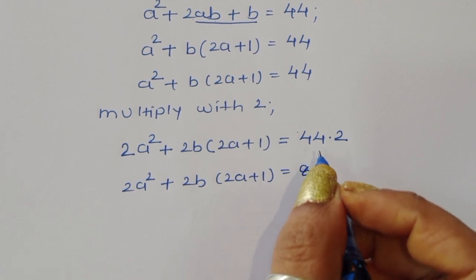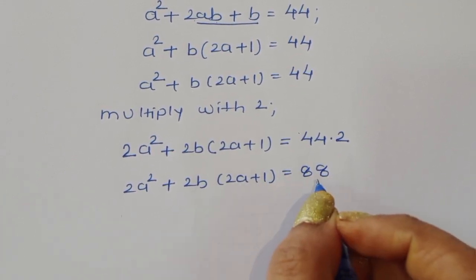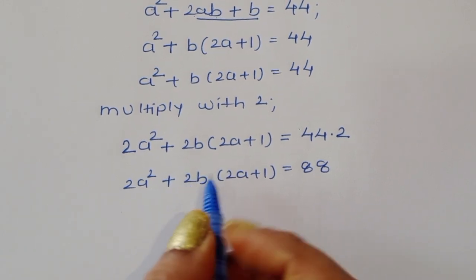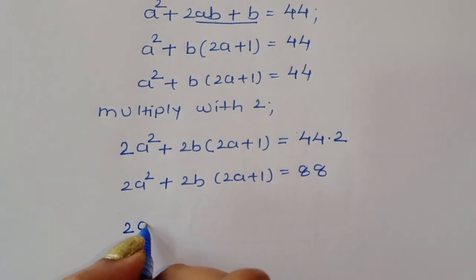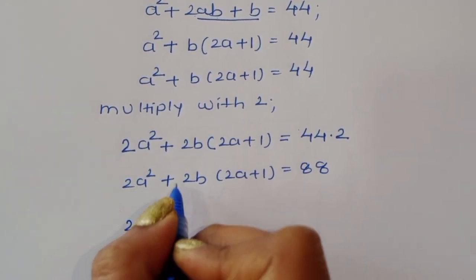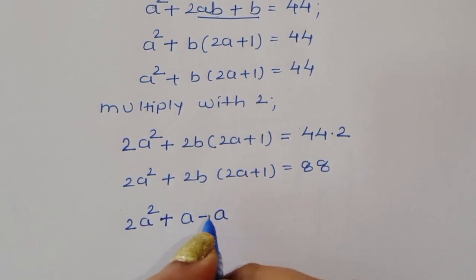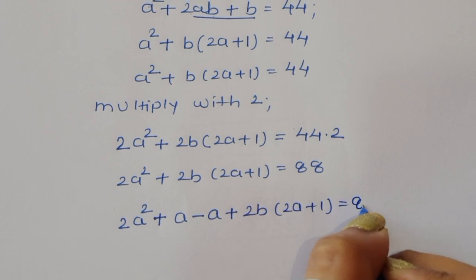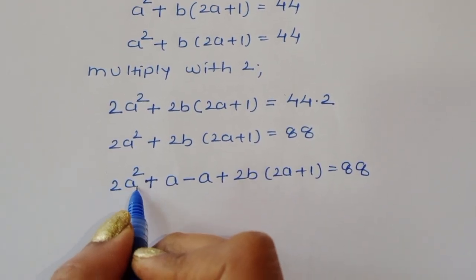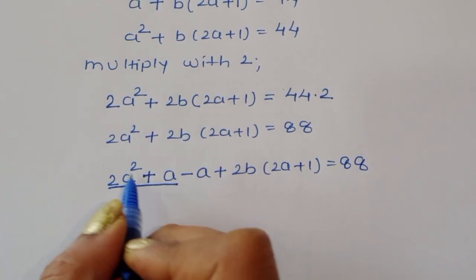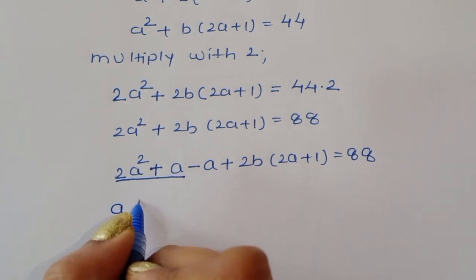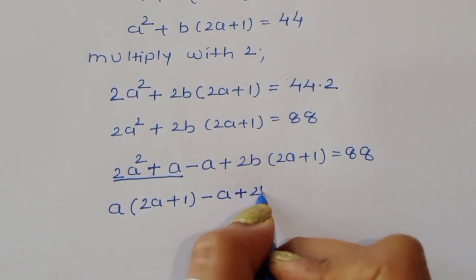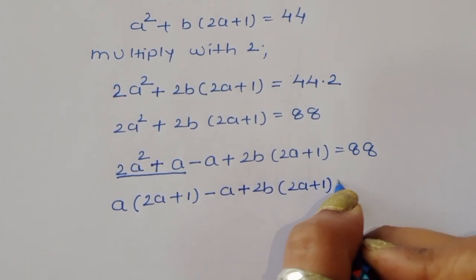Now we add and subtract a in the left-hand side — since we're adding and subtracting the same term the value stays the same. So we write 2a² + a and then take a common: a(2a + 1), minus a, plus 2b(2a + 1) = 88.